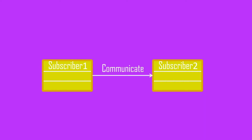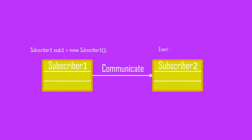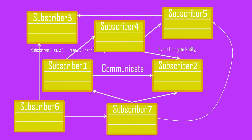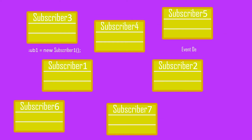Say you have two classes that want to communicate with each other — that's easy, we can either instantiate the object and communicate, or use an eventing mechanism. But say you have many such classes and they all want to communicate with each other. In that case, each subscriber would need to maintain the reference of all other subscribers, giving a very ugly, complex, and difficult-to-maintain dependency graph.